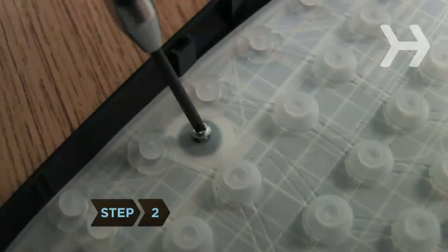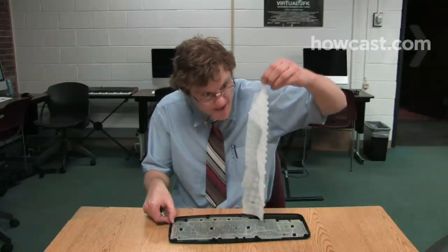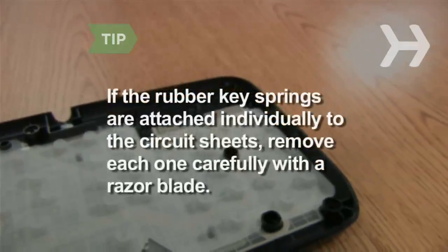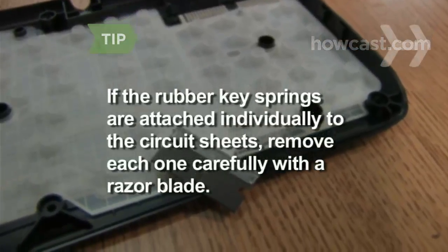Step 2. Unscrew the circuit board and remove it. Peel off the sheet of rubber keysprings. If the rubber keysprings are attached individually to the circuit sheets, remove each one carefully with a razor blade.